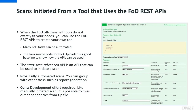What about scans initiated from a tool you create using the FOD REST APIs? We have a set of APIs available to you that enable you to automate a lot of what you can do within FOD, including scanning code. A good reference point for the REST APIs is the FOD Uploader tool we talked about earlier, available on GitHub — you can download that Java code to see how to use the APIs. On the right-hand side you can see a screenshot from a page relating to the Start Scan Advanced API, which is the API used to initiate the scan.